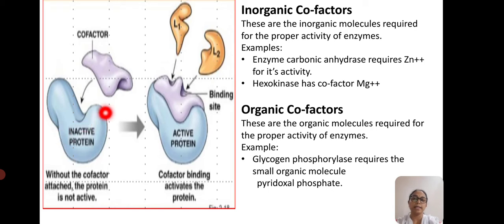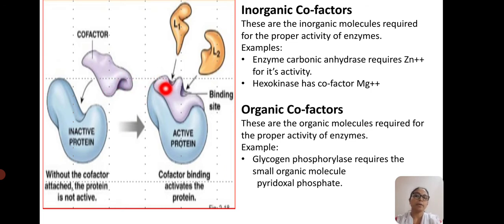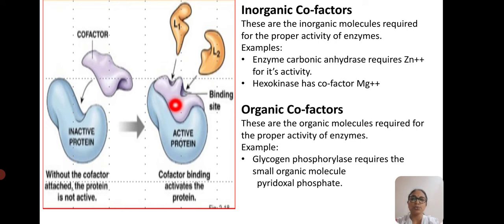The apoenzyme is in its inactive state when there is no cofactor. Alone, the apoenzyme cannot work in conjugated enzymes. Without the cofactor attached, the protein is very much inactive. It gets activated whenever the cofactor binds. The cofactor acts as an activator making the apoenzyme active. Then substrates can bind to the active sites and be converted into products. The actual catalysis takes place only after the addition of cofactors to the apoenzyme.